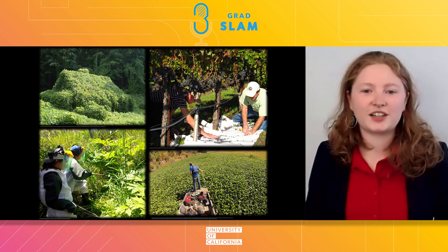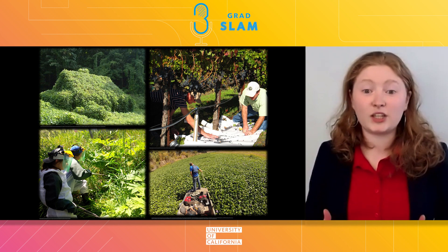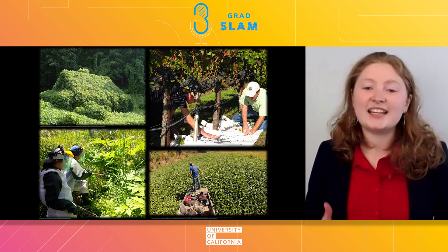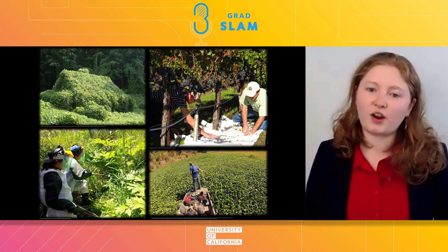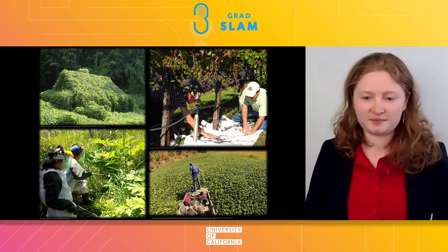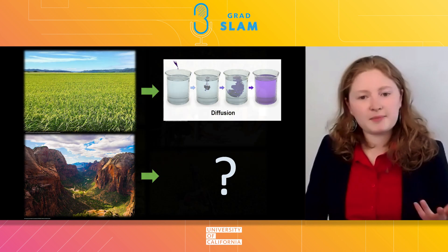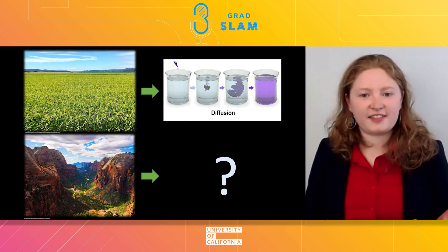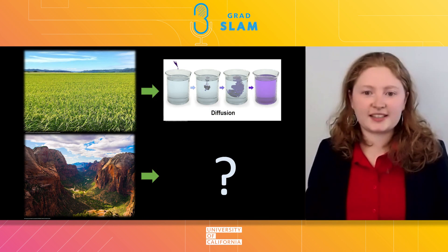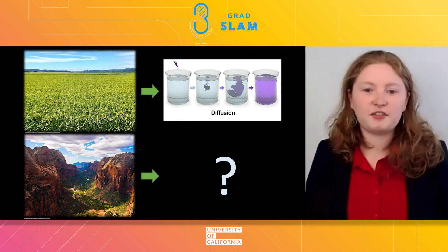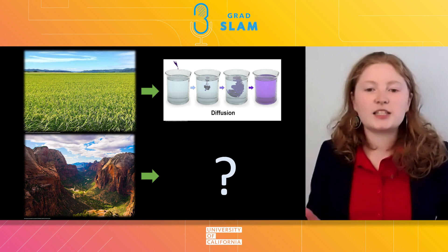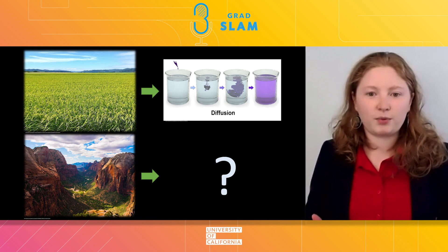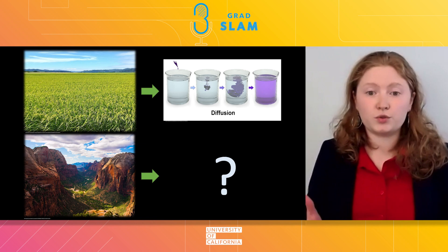I'm working with Dr. Khatri in the Applied Mathematics Department at UC Merced to answer this very question. Mathematicians understand that in a simple landscape — let's say a field — a species spreads in a process called diffusion.